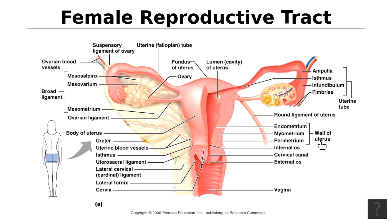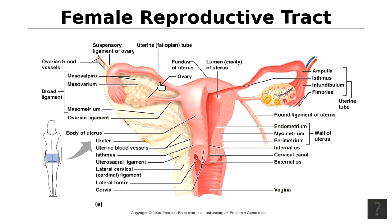The first layer is the perimetrium — P-E-R-I-M-E-T-R-I-U-M — a serous membrane. It is the visceral peritoneum, which becomes the broad ligament. This ligament helps to secure the uterus. The muscle layer is called the myometrium, which consists of three layers of smooth muscle.